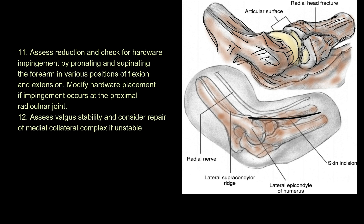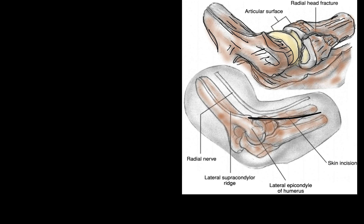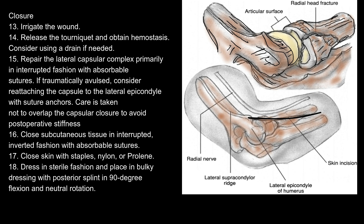11. Modify hardware placement if impingement occurs at the proximal radio-ulnar joint. 12. Assess valgus stability and consider repair of the medial collateral complex if unstable. Closure: 13. Irrigate the wound. 13. Release the tourniquet and obtain hemostasis. Consider using a drain if needed. 15. Repair the lateral capsular complex primarily in interrupted fashion with absorbable sutures. If traumatically avulsed, consider reattaching the capsule to the lateral epicondyle with suture anchors. Care is taken not to overlap the capsular closure to avoid postoperative stiffness.